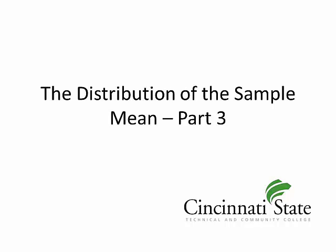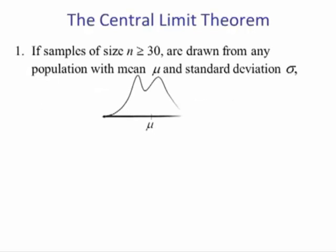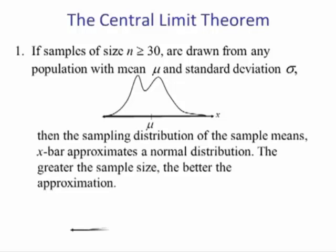This video covers the distribution of sample means and problems involving the central limit theorem. The central limit theorem states that if samples of size n greater than or equal to 30 are drawn from any population with mean mu and standard deviation sigma, then the distribution of the sample means x-bar approximates a normal distribution. The greater the sample size, the better the approximation.